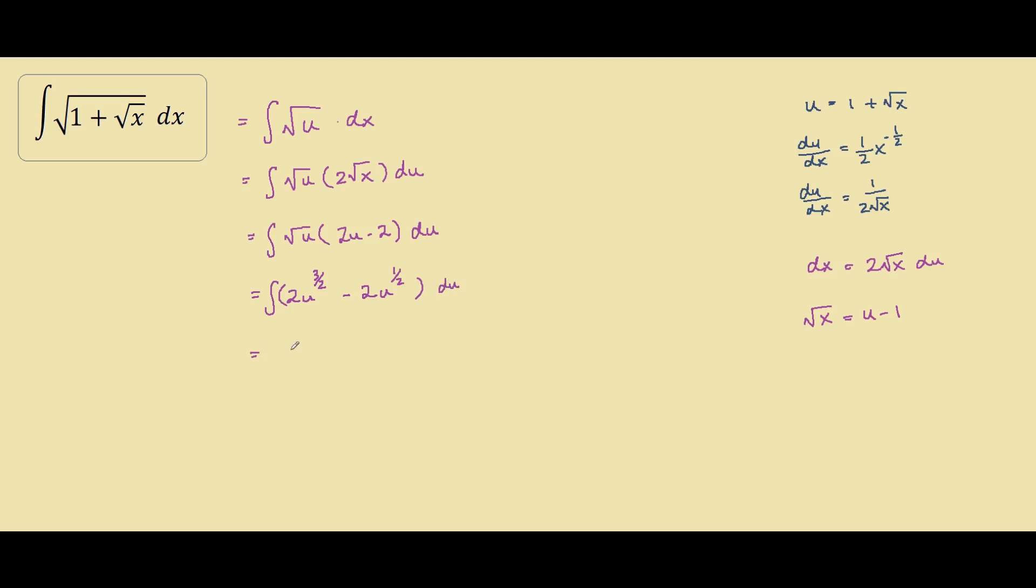Now we can integrate. So 2u raised the power by 1 would be 5 over 2 and divide by the new power. Minus by 2u again, raise the power by 1 would be 3 over 2, divide by the new power. Plus c.